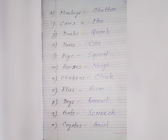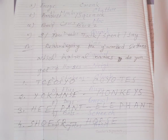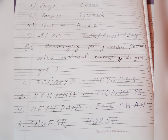O: Fly sound is hum, H-U-M. P: Dog sound is growl, G-R-O-W-L. Q: Bat sound is screech, S-C-R-E-E-C-H. R: Coyote sound is howl, H-O-W-L. S: Frog sound is croak, C-R-O-A-K. T: Parrot sound is squawk, S-Q-U-A-W-K.